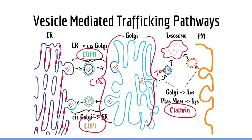In I-cell disease, there is a mutation in the GNPTA gene which renders GNPTA dysfunctional. Loss of GNPTA function means that mannose residues are not phosphorylated and the signal molecule for the lysosome is lost. This protein then undergoes the default pathway — constitutive secretion — and is therefore secreted out of the cell via exocytosis.